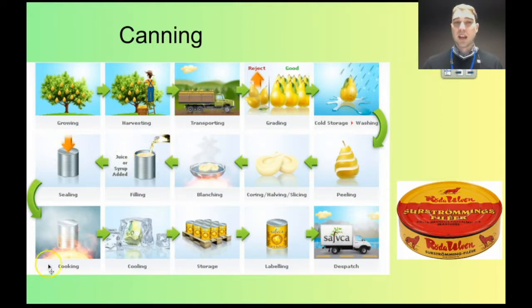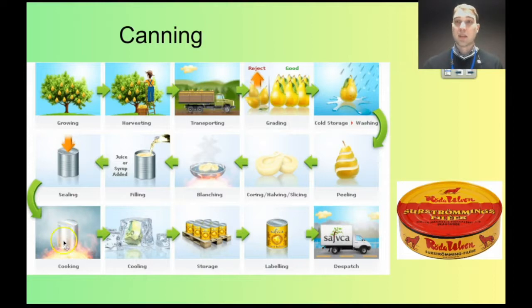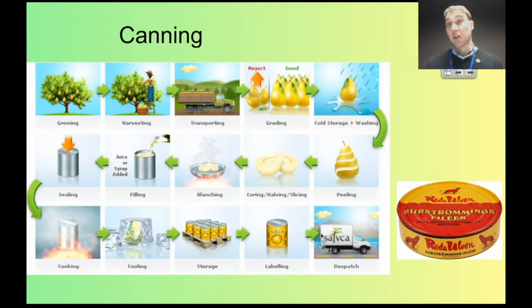You seal up the can and then cook it. The heat changes the shape of the proteins in the bacteria, stopping them from doing their jobs and killing them. High enough pressure can also build up so that bacteria are essentially squished and explode. Then you place your label on it, put it in a truck, and it's ready to eat.